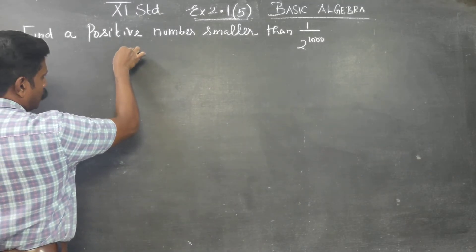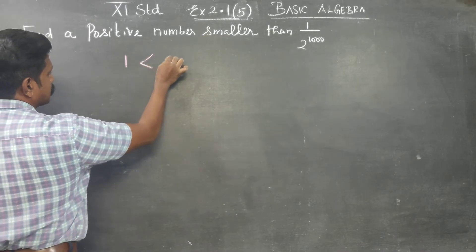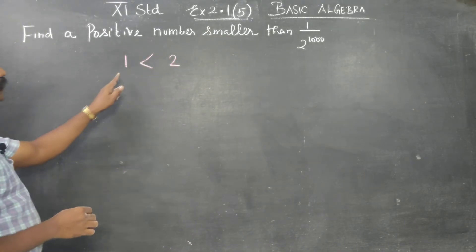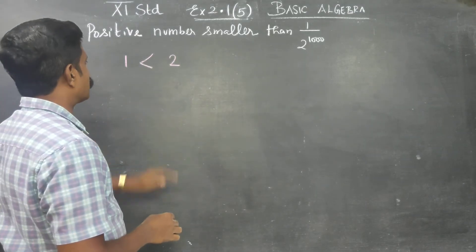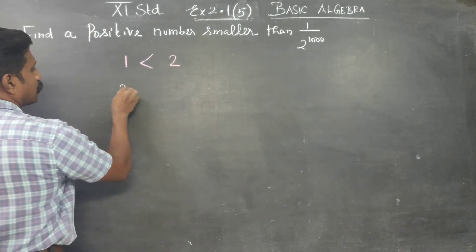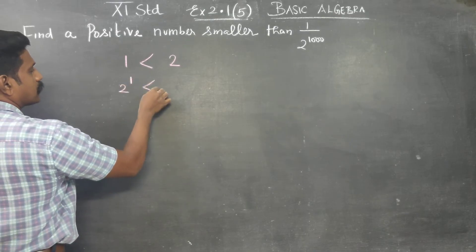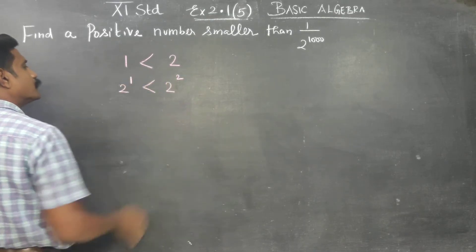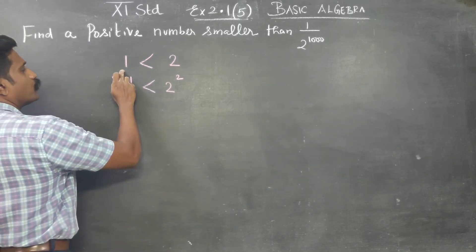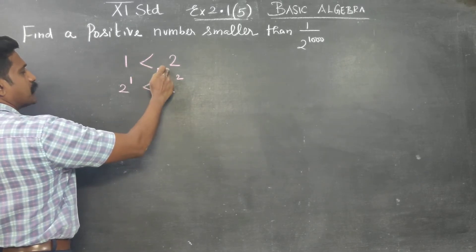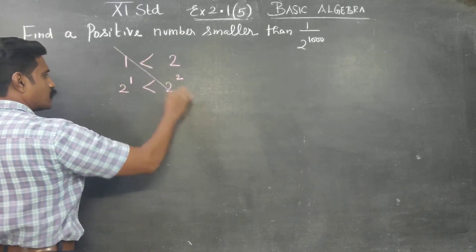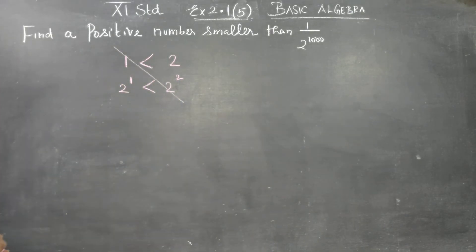Everybody knows 1 is less than 2. 2 power 1 is less than 2 power 2. 2 power 1 is 2, 2 power 2 is 4. Using this concept, I am going to start this problem.